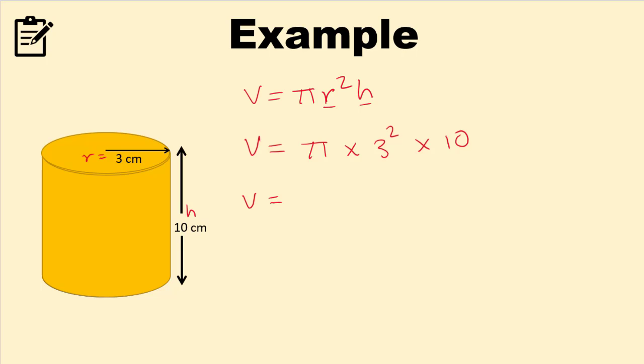Now in your exam, if it's a non-calculator exam, they might ask you to write down your answer in terms of π. Or if it's a calculator paper, they might ask you to round your answer to decimal places or significant figures. We are going to do both. So we're going to leave it as π first and then round our answer to decimal places or significant figures. Now if the question is asking you to leave it in terms of π, let's solve this bit. So 3 squared is 9, 9 times 10 is 90. So the answer will be in terms of π, 90π.